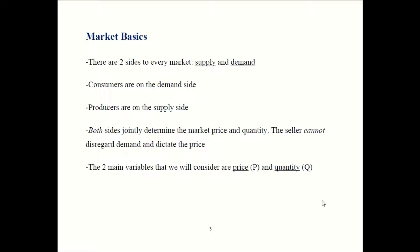Every market has two sides: supply and demand. Demand comes from consumers, so in most markets you're on the demand side. The main exception is the labor market, where you provide — you supply — labor, making us suppliers. Producers are on the supply side; a firm trying to sell goods is a supplier. Now, price and quantity are jointly determined by both supply and demand. The producer does not dictate the price — that's an important misconception to be aware of.